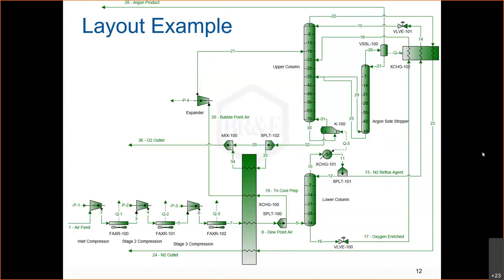An example layout is shown — there is no single general configuration. We'll be building this in ProMax today. The four steps visible in the layout are: first, compression with purification (simplified here by assuming the air feed is already water- and CO2-free, though you could add a Molsieve imitation with a divider block in ProMax). Compression is done in multiple steps because the target pressure of 6–10 bar cannot be achieved from atmospheric in one step.